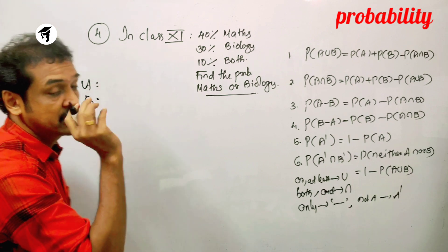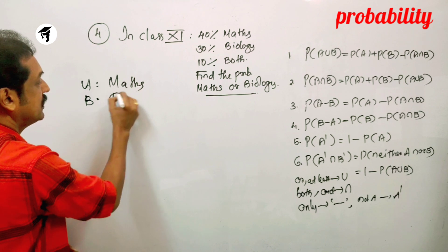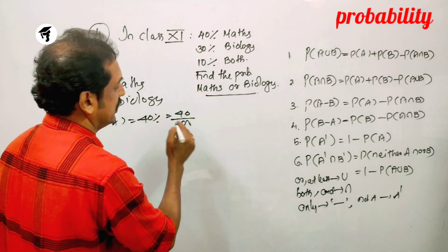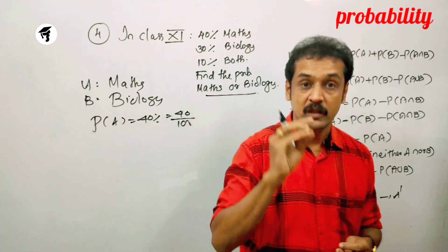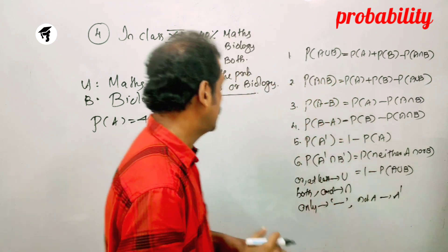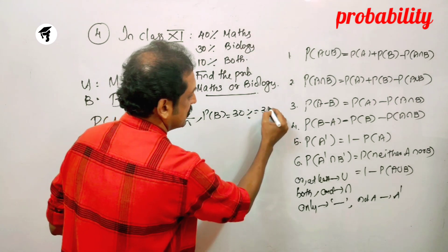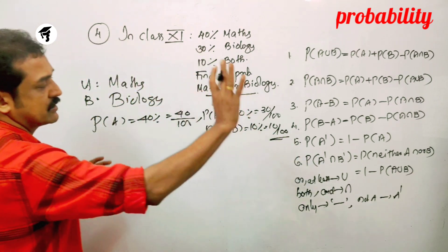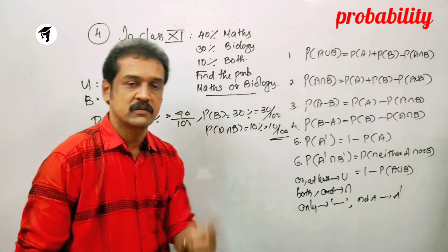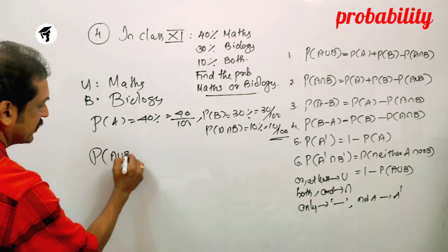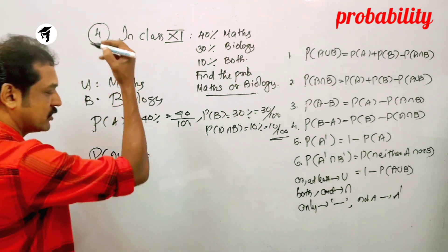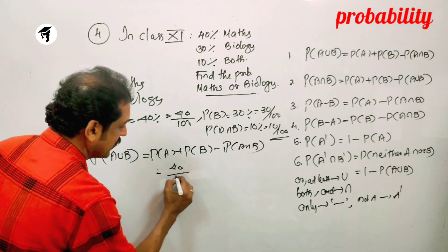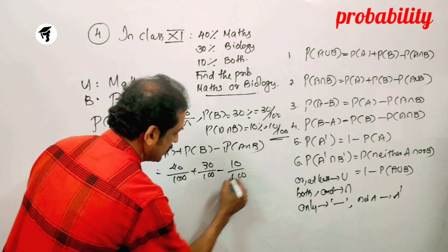Let A be maths and B be biology. P of A equals 40%, that is 40 by 100. P of B is 30 by 100. P of A intersection B is 10%, equal to 10 by 100. We need to find P of A union B. P of A union B equals 40 by 100 plus 30 by 100 minus 10 by 100.